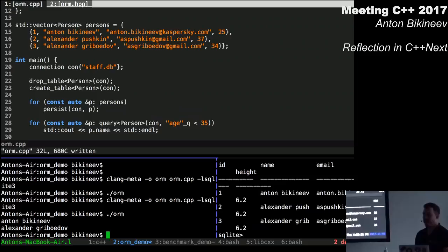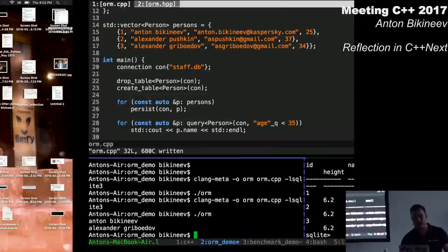Compile. Run. It works. So magic. And let's try to select something from the table. Let's call the function query that returns result in range. And query on the struct person. And let's pass a user defined literal to it. Say that we want to get all the people under the age of 35 and print their names. Compile. Run. Here we are. It works.